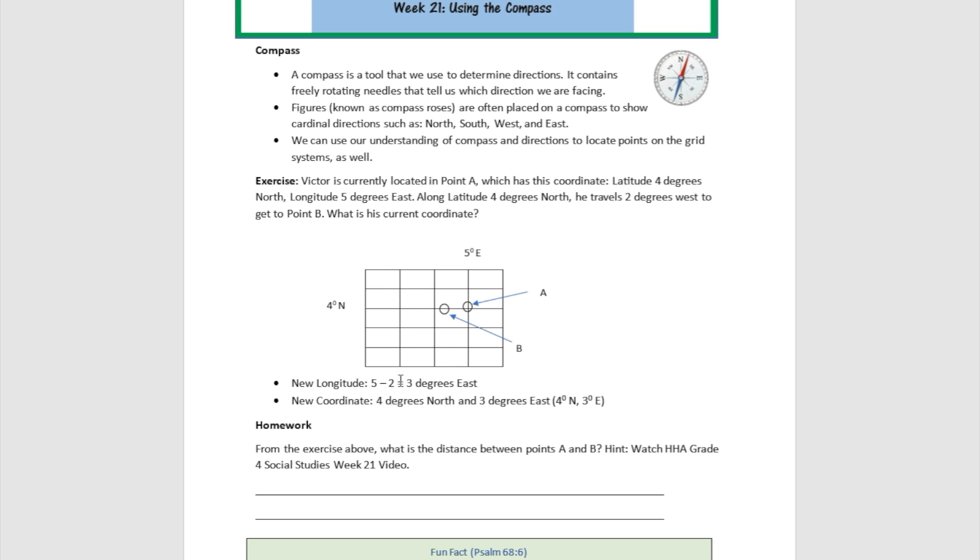Well, his current coordinate along the longitude line is going to be five degrees minus two. So that's going to be three degrees east. That's where he is right now, longitude speaking. But then his latitude hasn't changed because he didn't travel up north. He didn't travel downward. So his latitude is going to be the same thing. So the new coordinate is going to be four degrees north in latitude and three degrees east in longitude.